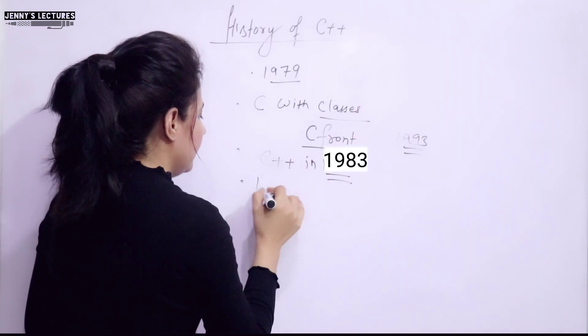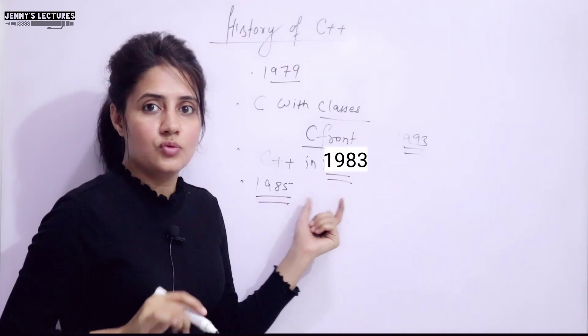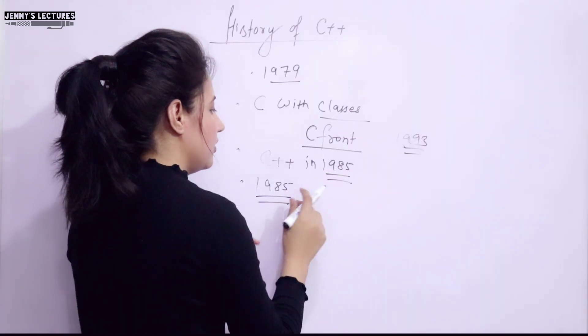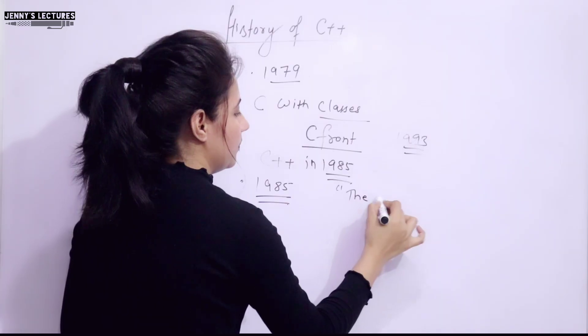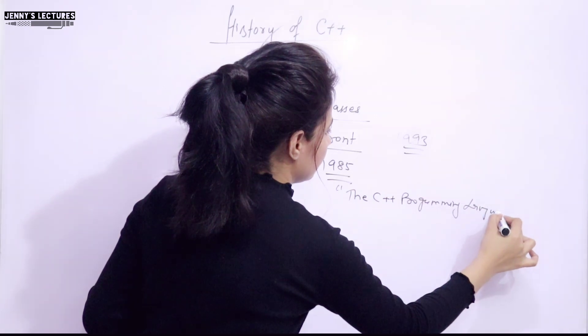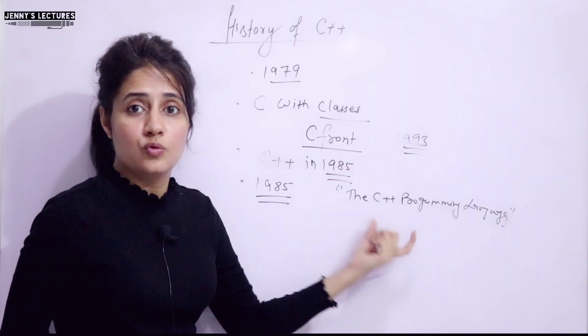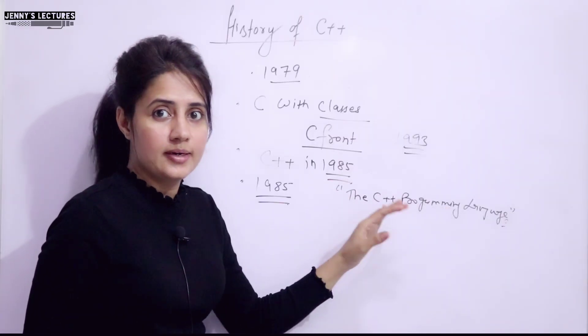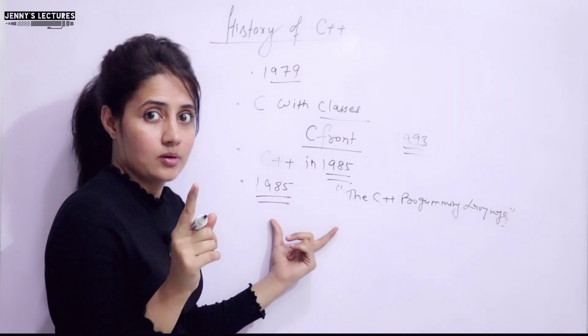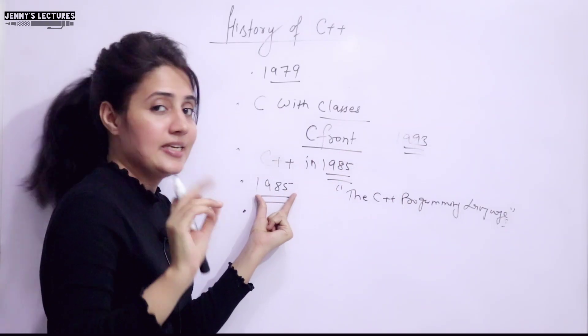Now, in 1985, the first commercial version was released in 1985. So, the first edition, you can say the first edition, the C++ programming language. So, in this 1985, the first edition of this, the C++ programming language, this book was released, but it was not standardized yet. And C++ was also implemented as a commercial product in the same year. Means you can say it was made available outside of the Bell Labs first time in 1985.